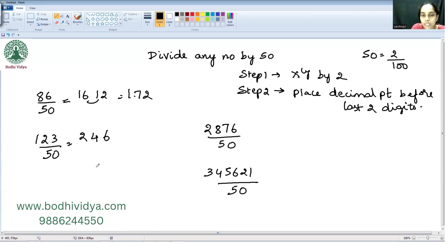So it is 2, 4, 6. Place the decimal point before the last 2 digits, so it is 2.46.